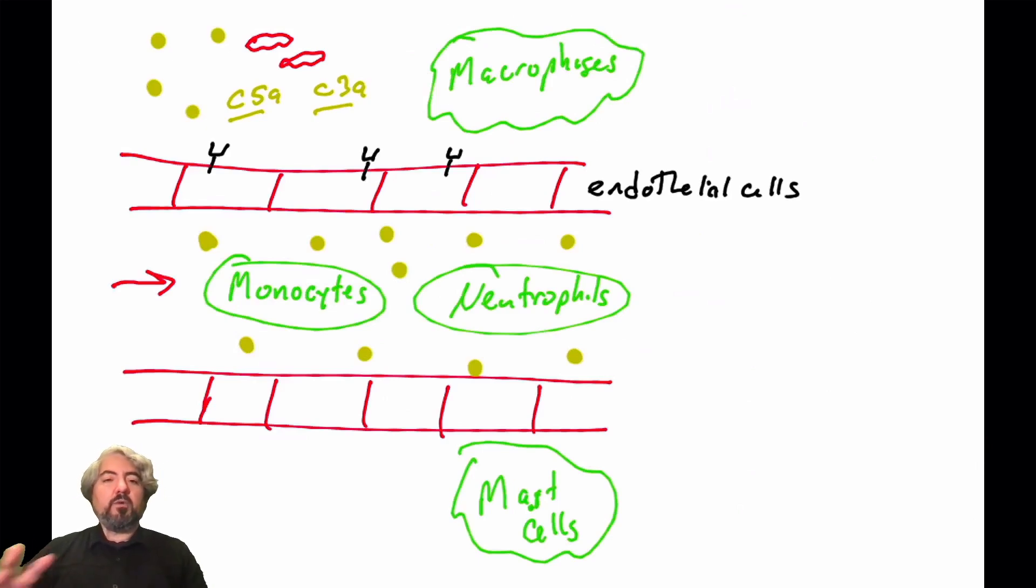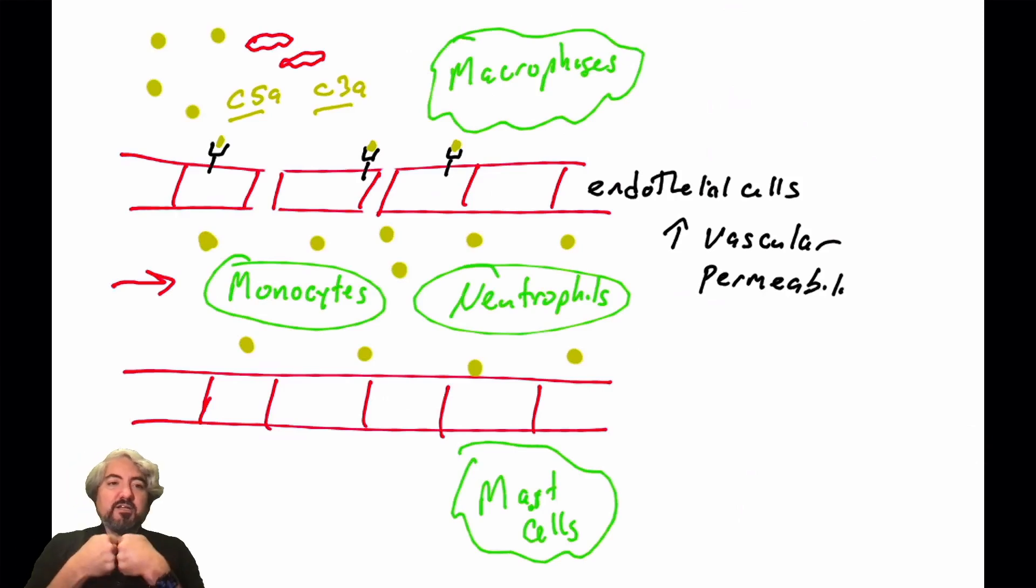First, let's talk about one of their target cells, endothelial cells. If you recall, blood vessels are lined with endothelial cells. They're a type of simple squamous epithelial cells. They have receptors for C5A and C3A. When these anaphylatoxins bind their receptors on endothelial cells, they're going to trigger the endothelial cells to change their tight junctions. Those tight junctions between the cells are not so tight anymore.